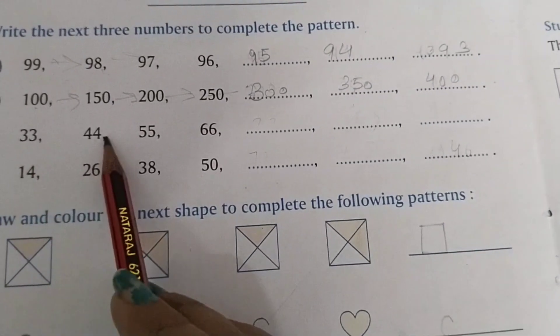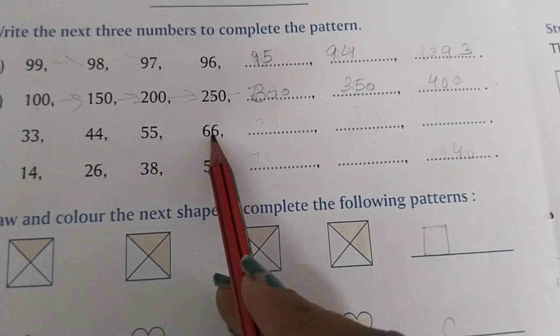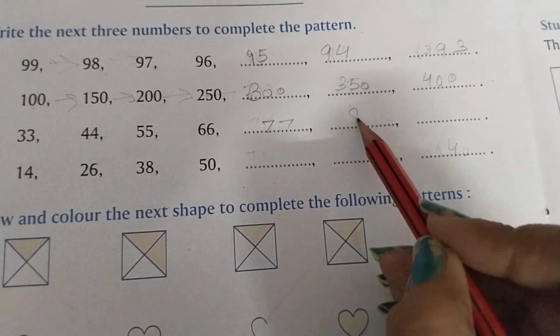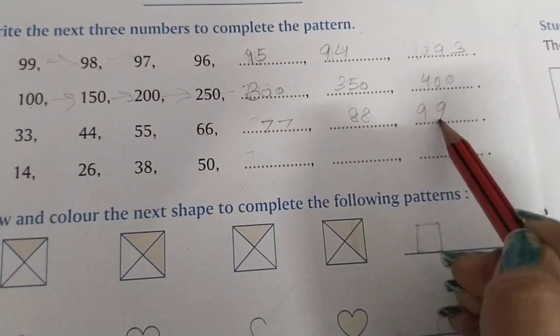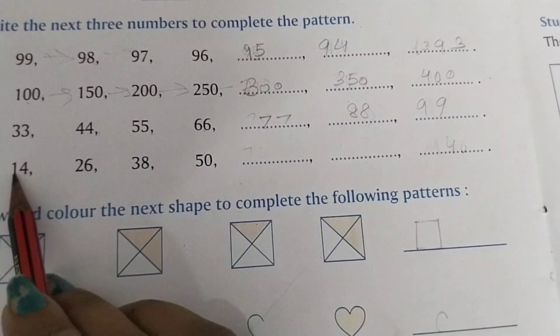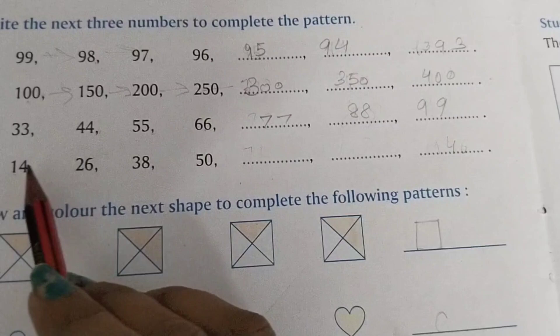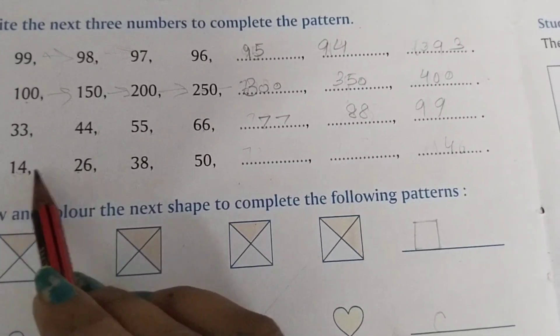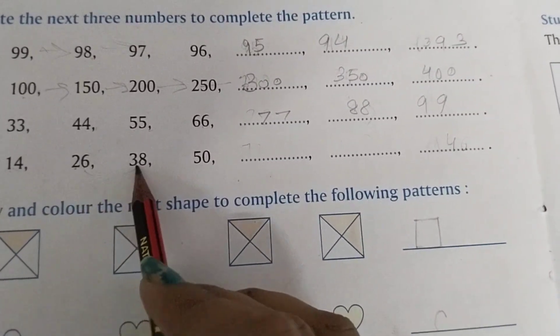Now 77, 88, 99. Next: 14, 26. How many numbers are added? 12. Then 38, 12 numbers are added. Then 50, 12 numbers are added.